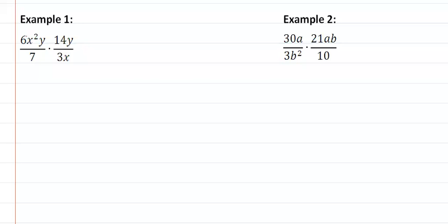If I look, 6 and 3 have a common factor of 3. 6 divided by 3 is 2, 3 divided by 3 is 1. 7 and 14 have a common factor of 7. 7 divided by 7 is 1, 14 divided by 7 is 2.